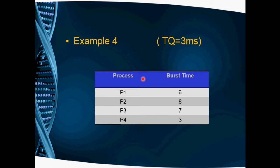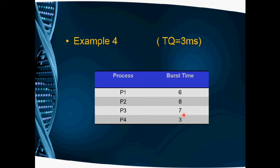We will see an example. There are 4 processes: P1, P2, P3, and P4, with their respective burst times. The time quantum is 3 milliseconds. This is the basis for the round robin scheduling example.